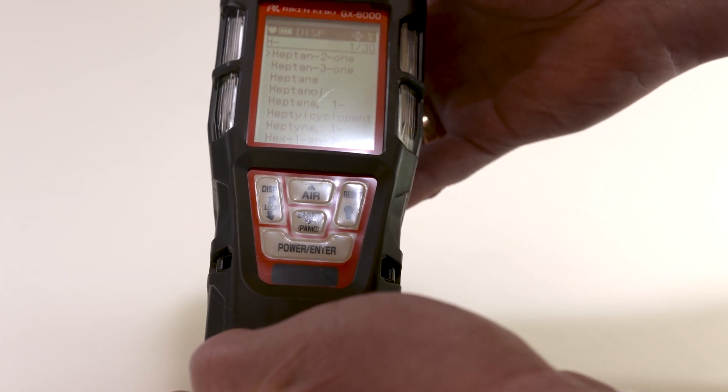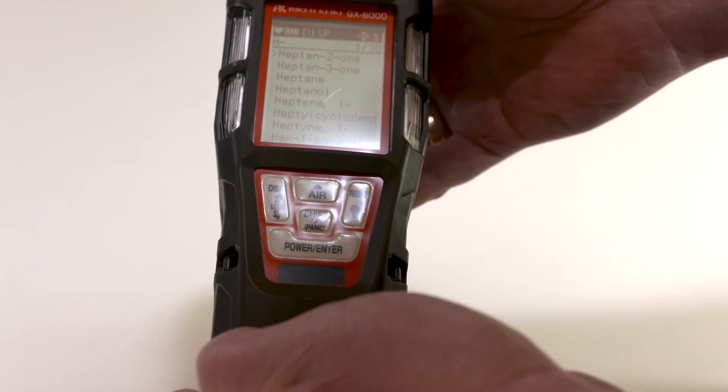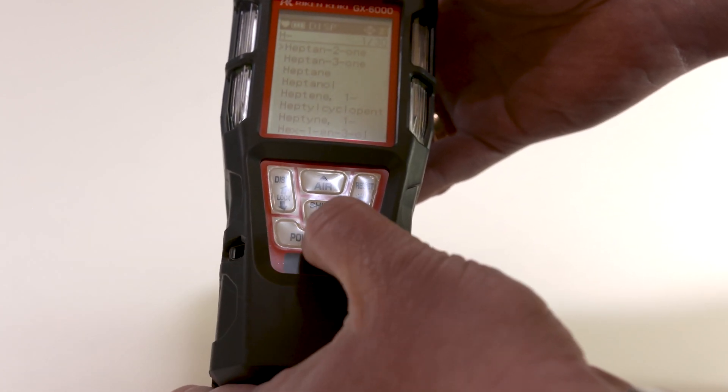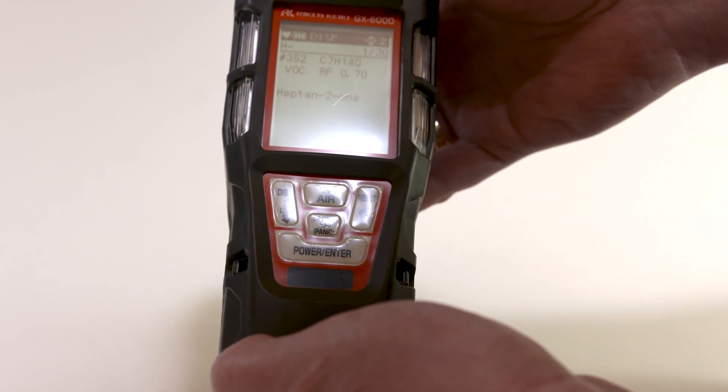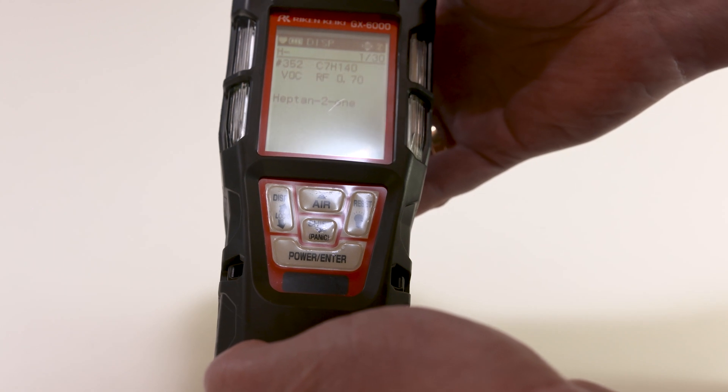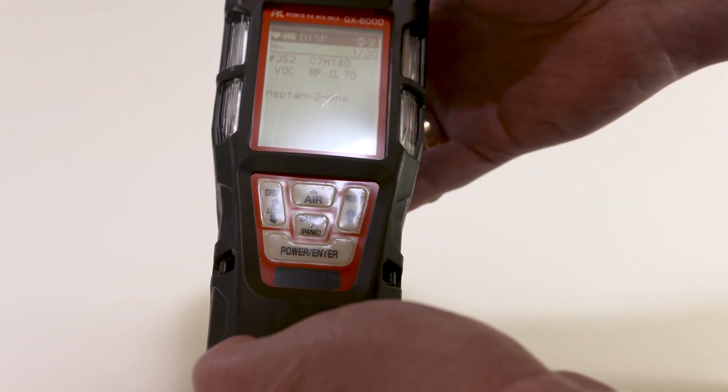If you want to return to the previous step, press the display button. Otherwise, press the enter button again. The gas name, chemical formula, and conversion factor of each gas are displayed. If you want to return to the previous step, press the display button.